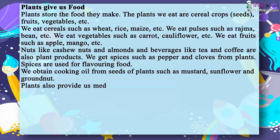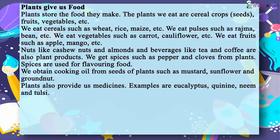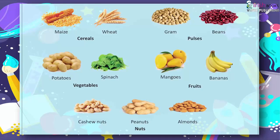Plants also provide us medicines. Examples are eucalyptus, quinine, neem and tulsi. Plant food categories: maize, wheat — cereals; gram, beans — pulses; potatoes, spinach — vegetables; mangoes, bananas — fruits; cashew nuts, peanuts, almonds — nuts.